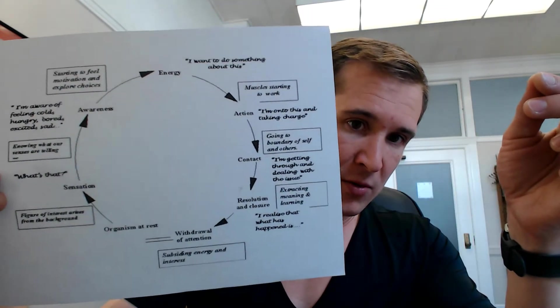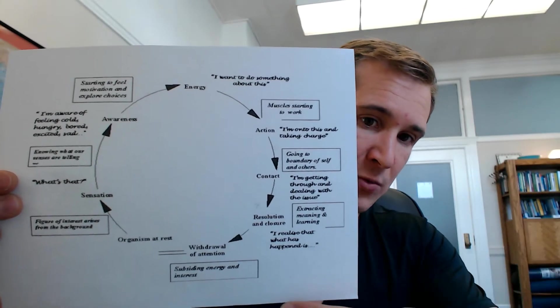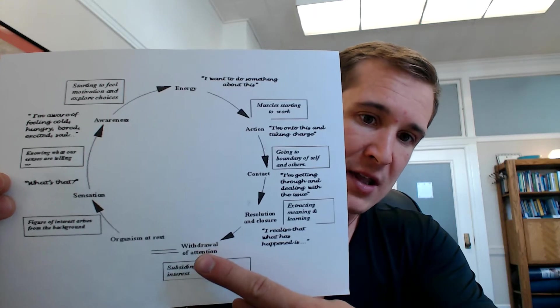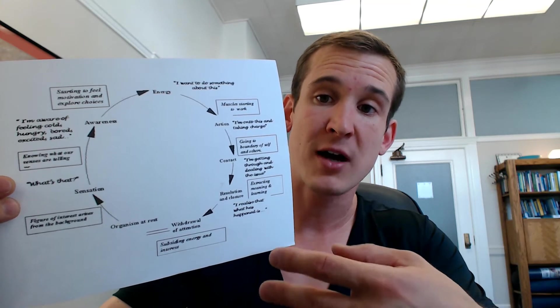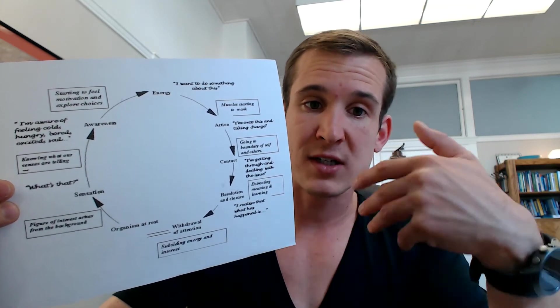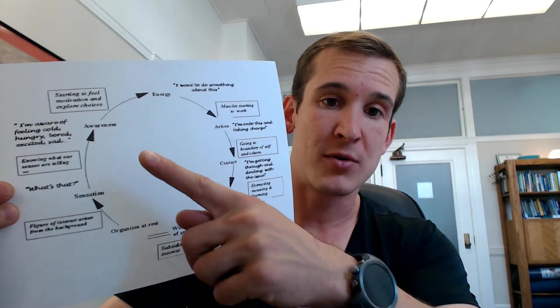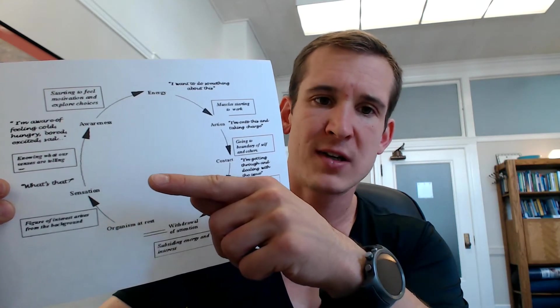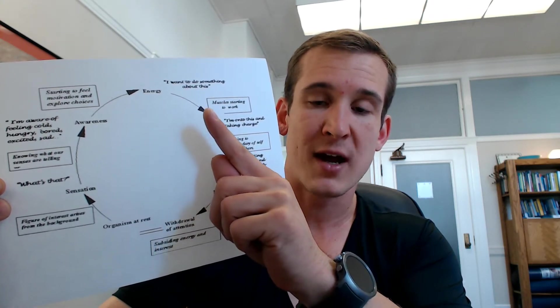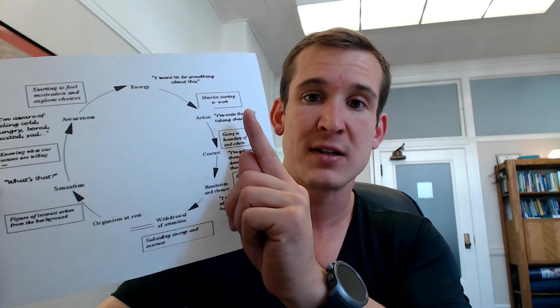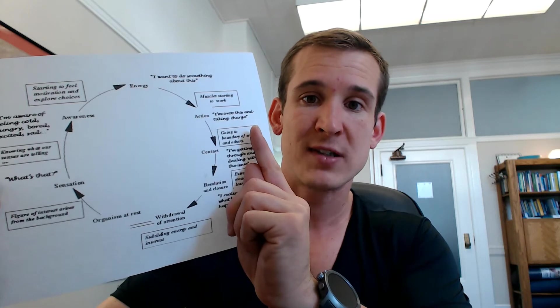Now, to get a little more into the nuts and bolts, there's a concept within Gestalt called the need formation and destruction cycle. Here's an example. Let's say the organism is at rest, and then they notice the sensation. What is that? A figure of interest arises out of the background into the foreground, and we start to bring that into our awareness. And then as we're getting to the awareness, I'm like, oh, my stomach is grumbling. I must be hungry. So along with that awareness, energy starts to rise, impulse starts to happen, and muscle activation starts to take place, and we start to move into action.